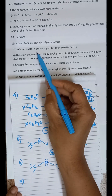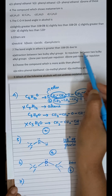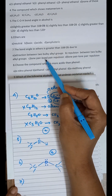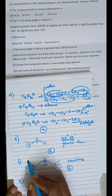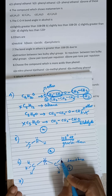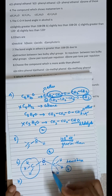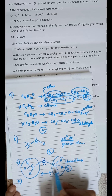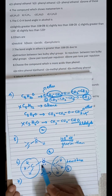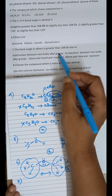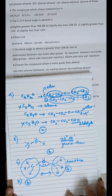Question 7: the bond angle in ethers is greater than 108°28' due to which reason? In ethers there are two alkyl groups, one on each side of the oxygen. There is repulsion between these two bulky alkyl groups, which pushes the bond angle wider. So the bond angle is greater than 108°28' due to repulsion between the two bulky alkyl groups. Option B is the correct answer.